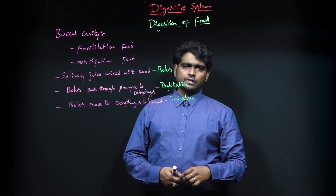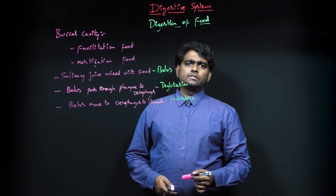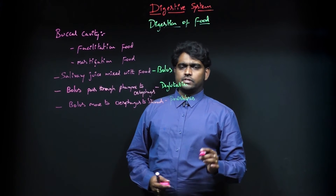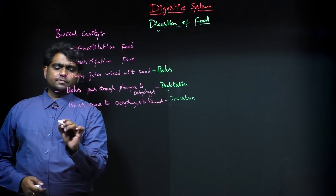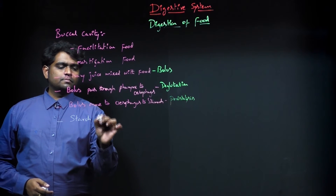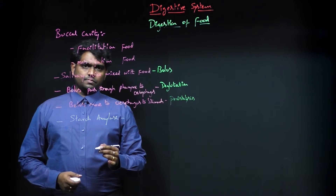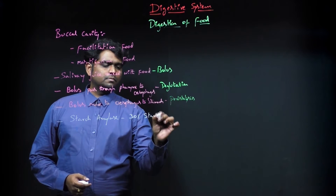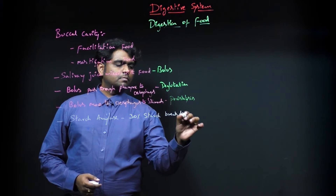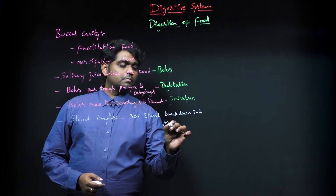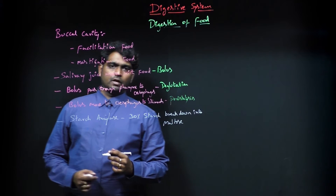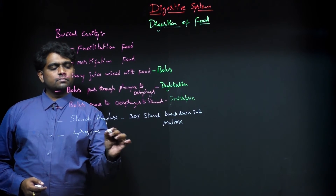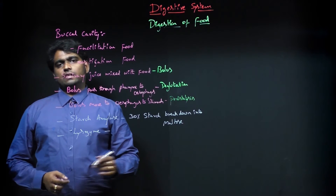Salivary juice has an important composition: starch amylase and lysozyme. Starch amylase helps to break down 30% of starch into maltose. The next component, lysozyme, helps to kill bacteria.